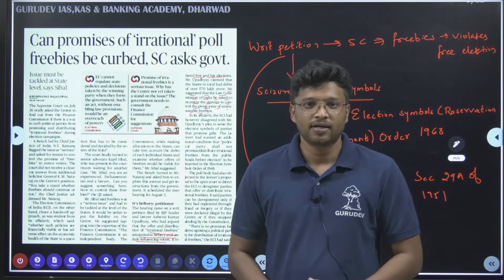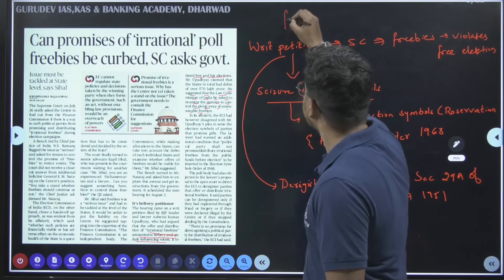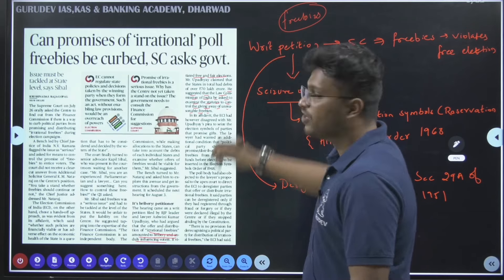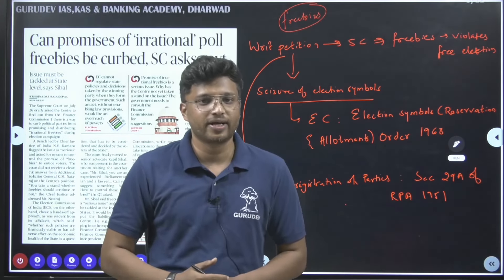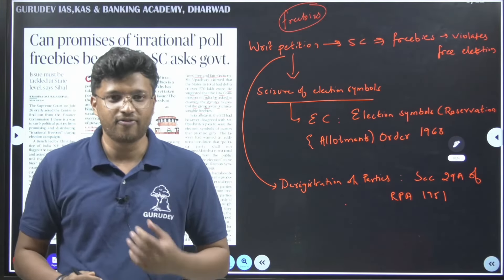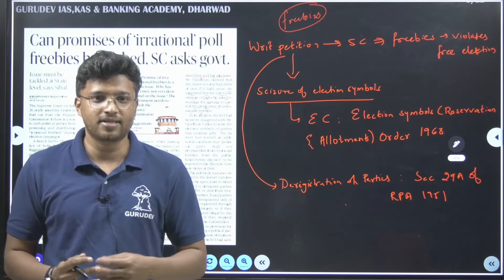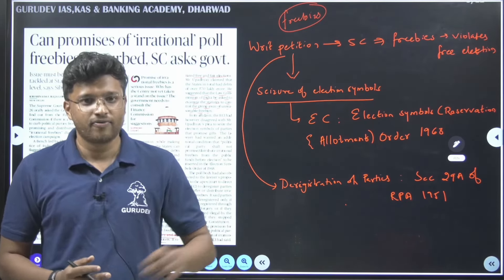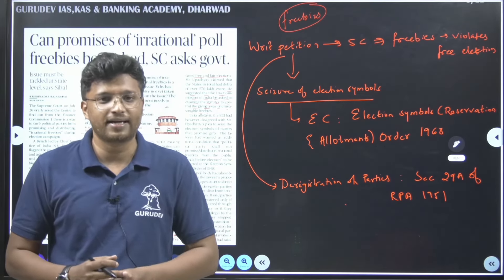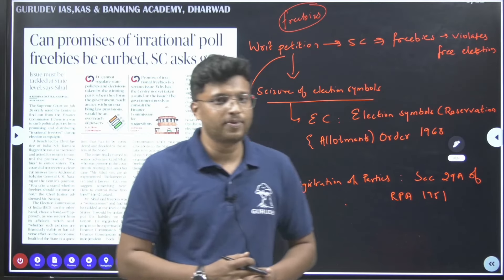Firstly, on the front page, the article talks about freebies. Freebies are the things that are promised during an election — a party promises in its manifesto that after coming to power they will provide certain things for free. For example, some states are trying to provide free electricity up to certain units.